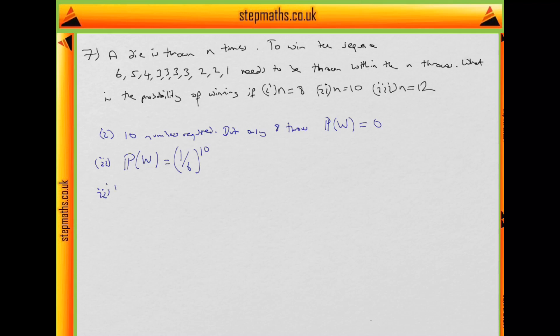What about (iii)? So you have 12 throws. Let's think about this way. There's 12 possible slots: 1, 2, 3, 4, 5, 6, 7, 8, 9, 10, 11, 12.